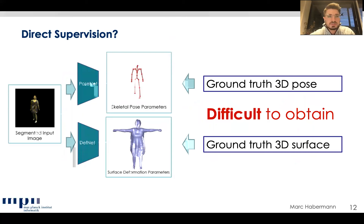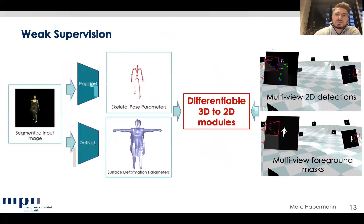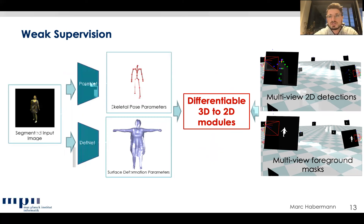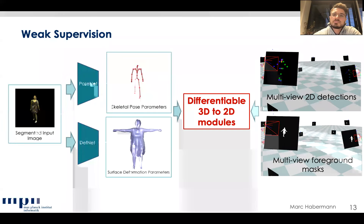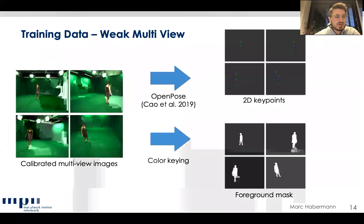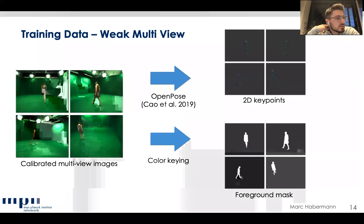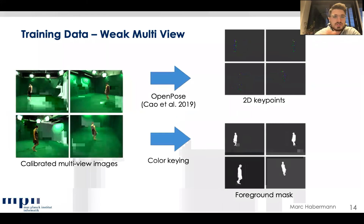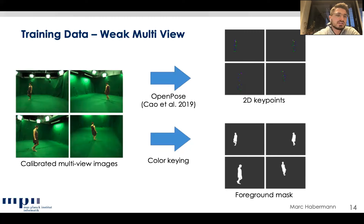Since direct supervision is difficult, we use a weakly supervised setup. The two networks receive supervision signals from 2D joint detections across multiple views and foreground masks from multiple views. To evaluate these losses, differentiable 3D-to-2D modules are required. For training data, we use calibrated multi-view images, apply OpenPose to get 2D joint detections in all views, and use color keying to obtain foreground masks — all of which can be automated and is relatively easy to obtain.